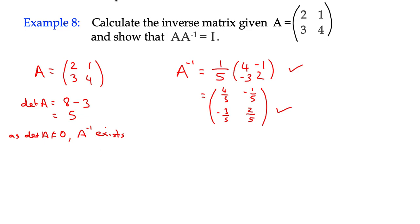Show that A times its inverse gives you I. Well, let's write it down. A times the inverse matrix. If I write out the elements, 2, 1, 3, 4, multiplied by, I'm going to use this form here, so multiplied by a 5th of 4, negative 1, negative 3, 2.